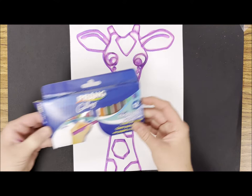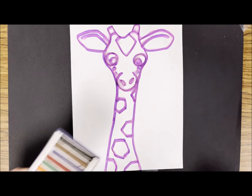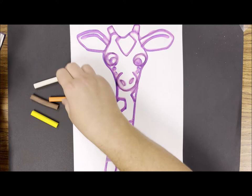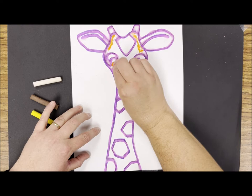All right, my giraffe is dry and I am ready to fill it in with chalk pastels. I'm going to be using a variety of warm colors like yellow, orange, brown, and even some white to lighten it. I'm going to start by drawing with orange and then filling in the spaces with yellow.